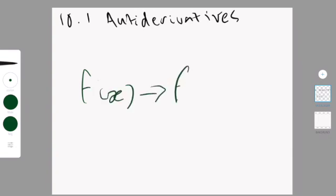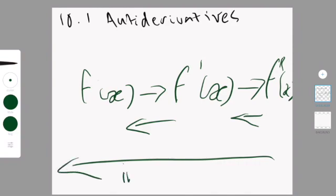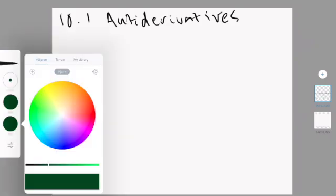So the first thing we have to go through is what is an antiderivative. When you derive, you go from f of x to f prime of x to f double prime of x. But when you antiderive, you go the opposite way. This can also be called integration. So I'm going to show it through an example.